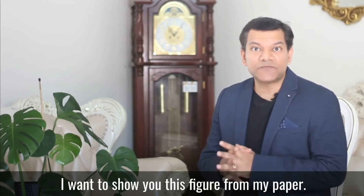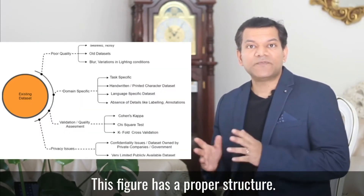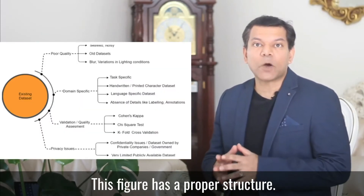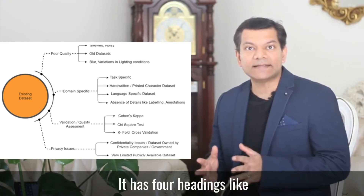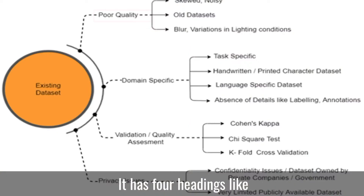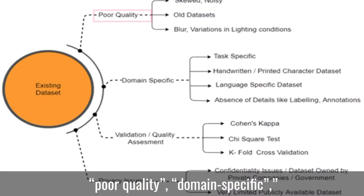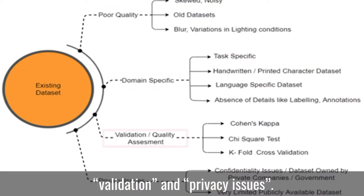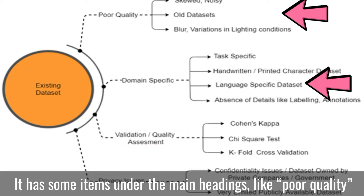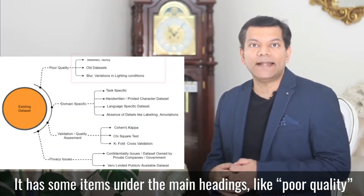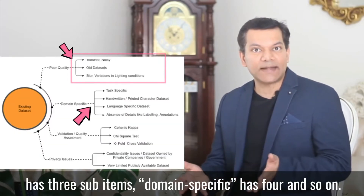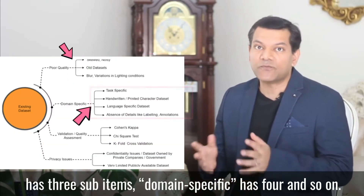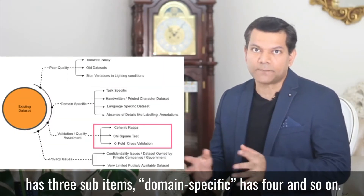I want to show you this figure from my paper. This figure has a proper structure. It has four headings: Paper Poor Quality, Domain Specific, Validation, and Privacy Issues. It has sub-items under the main headings — Poor Quality has three sub-items, Domain Specific has four, and so on.